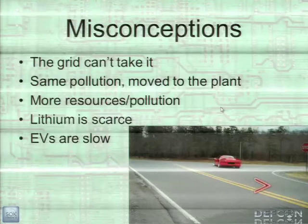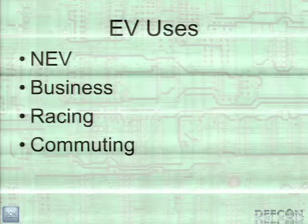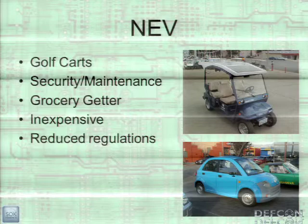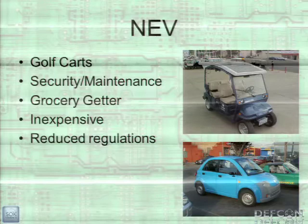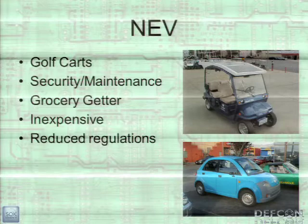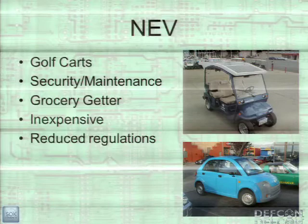It's just a funny clip where a dude does a U-turn right in the intersection and takes off. EV uses: there are lots of different things people use them for. One popular application is neighborhood electric vehicles. Businesses are starting to use them a lot. They're used in racing, and my favorite use is commuting. Everyone's familiar with golf carts. EVs are popular for security and maintenance vehicles because they're quieter with no emissions. People use them for grocery getters and running errands around town. Low-speed cars are very cheap to build, and you sometimes don't need registration, safety inspections, or emissions inspections — they can be a lot cheaper to operate depending on the state.